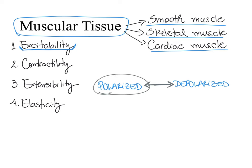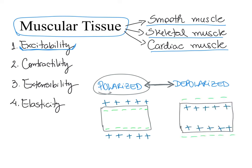A polarized cell is a cell that has the inside more negative relative to the outside environment — that is what we call resting membrane potential. Nerve cells and muscle cells are capable of reverting polarity. When stimulated, they go from being more negative on the inside to more positive on the inside compared to the outside. When that happens, we say the cell is depolarized, and this change in voltage is what we call an electrical signal — an action potential. So muscle cells and nerve cells are excitable; they have the property of excitability.